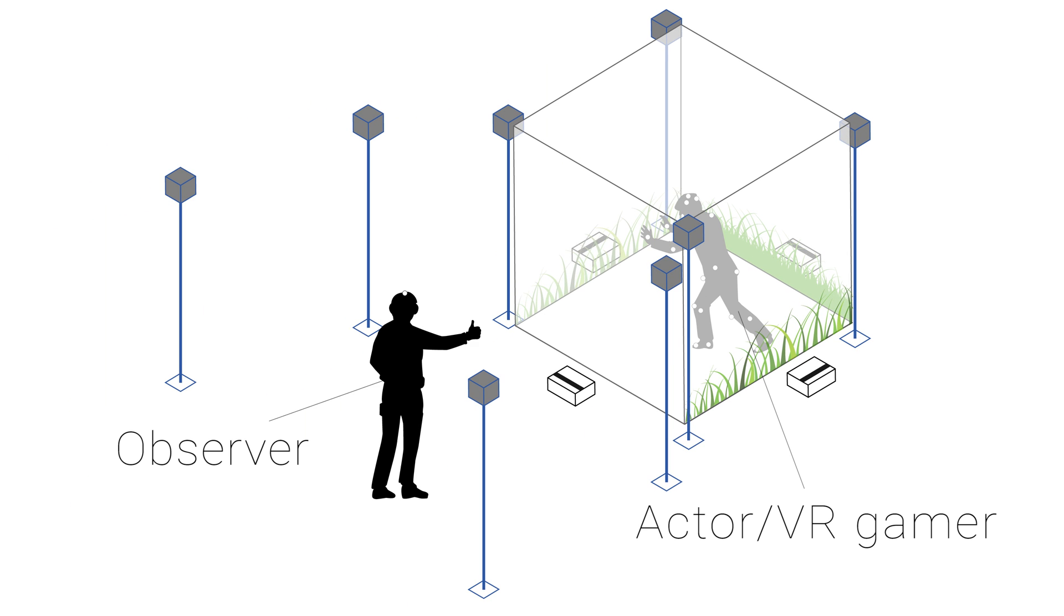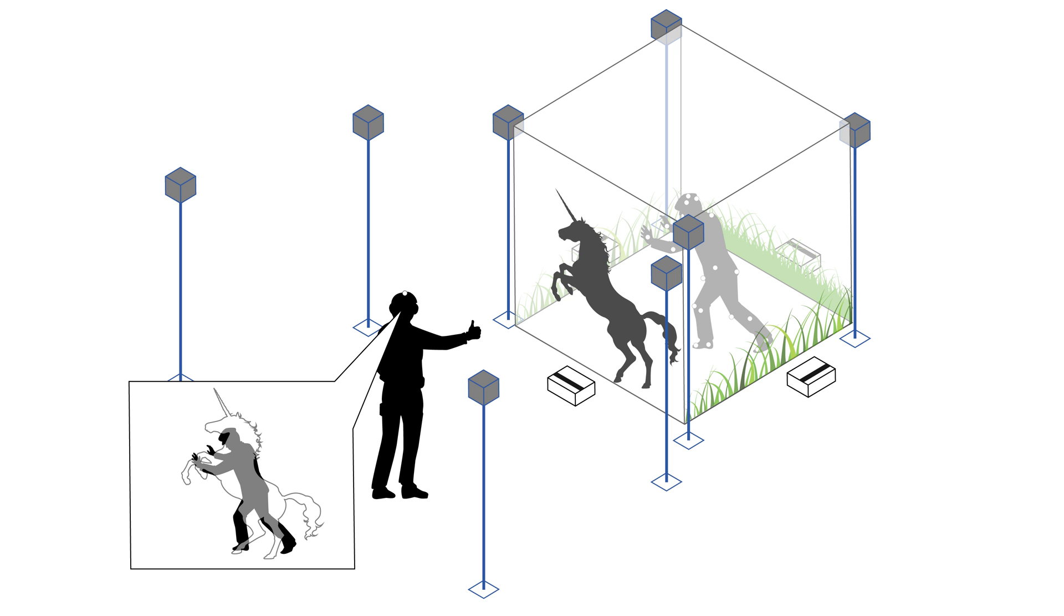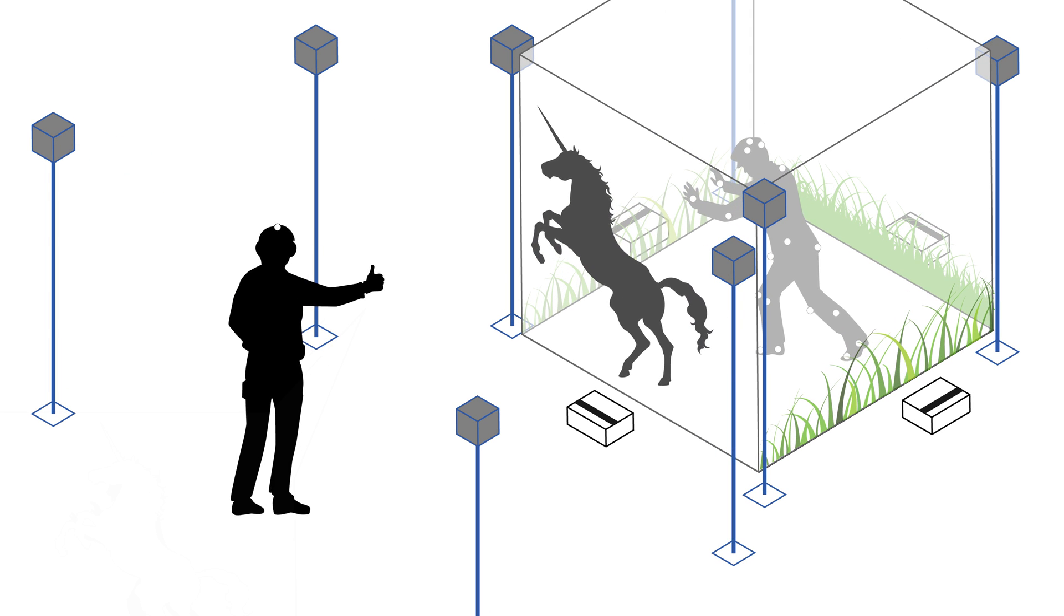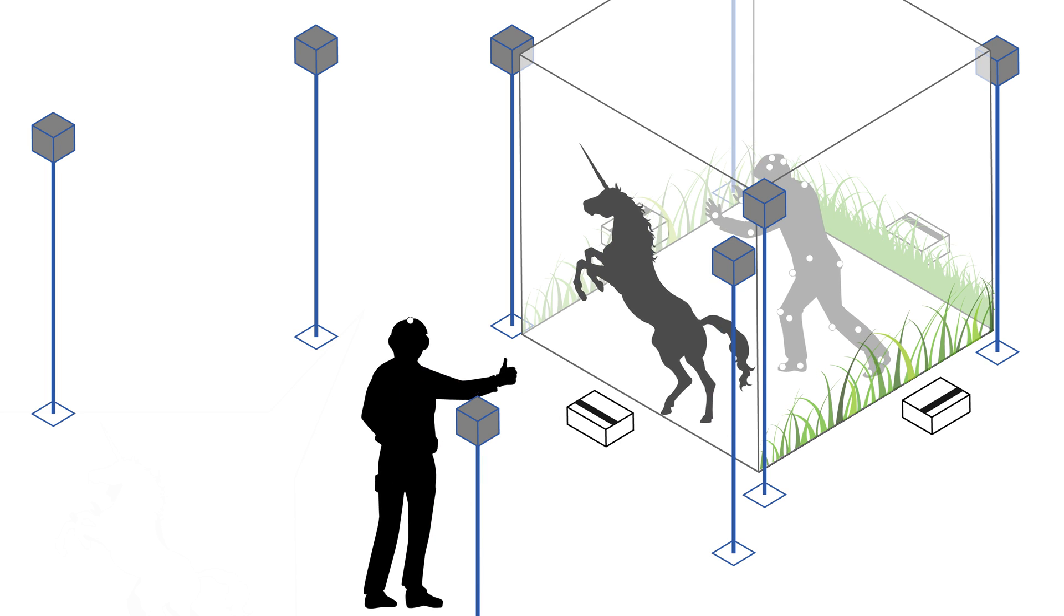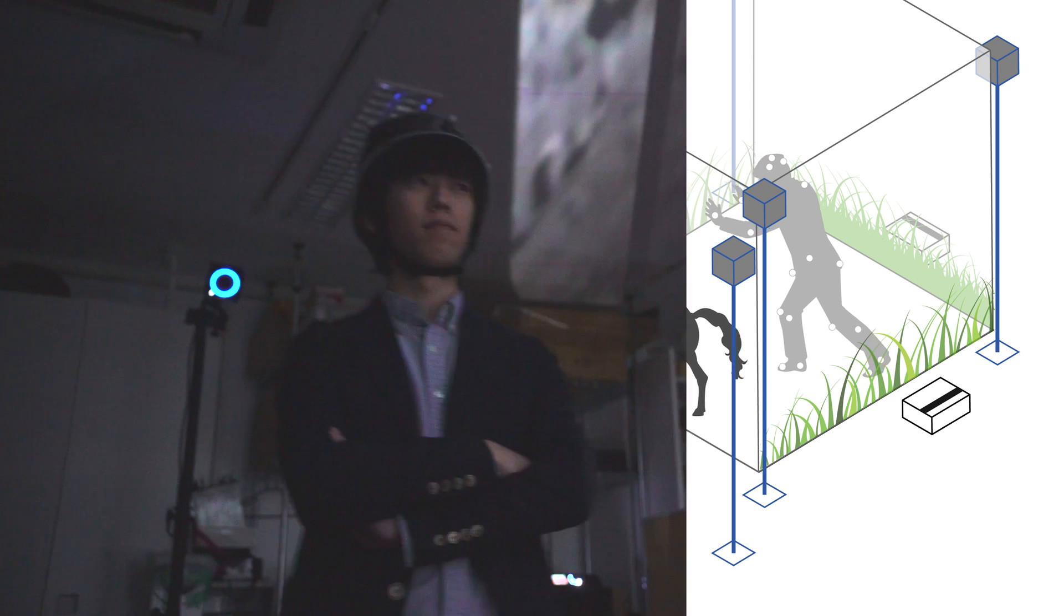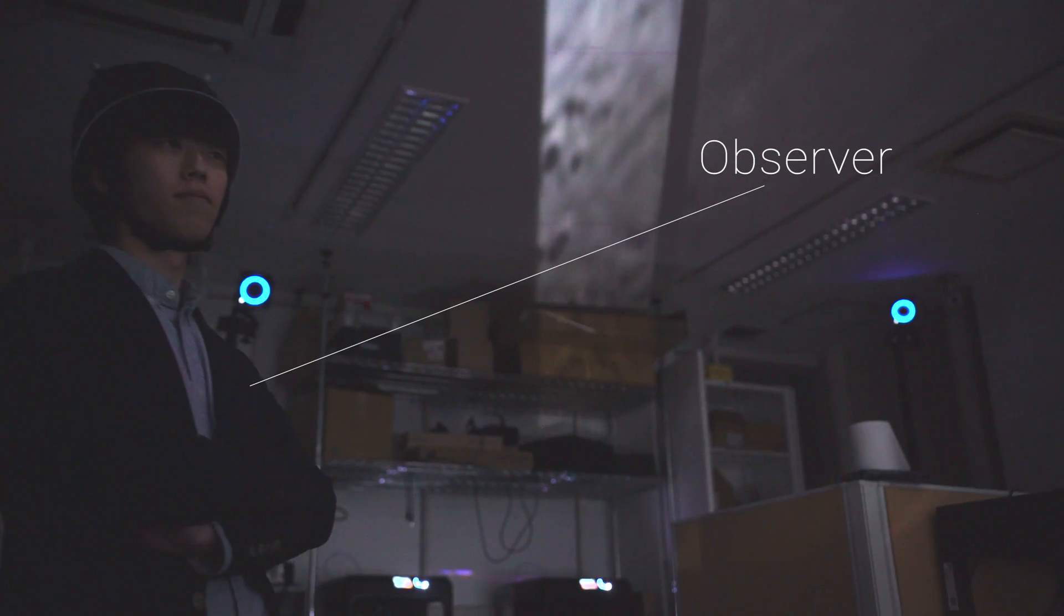By this, the observer outside of Reverse Cave can see both the actual player and the VR environment. Also, when viewing the actor from the observer's side, the character is superimposed to the actor. This makes it look as if the actor is the character from the observer.